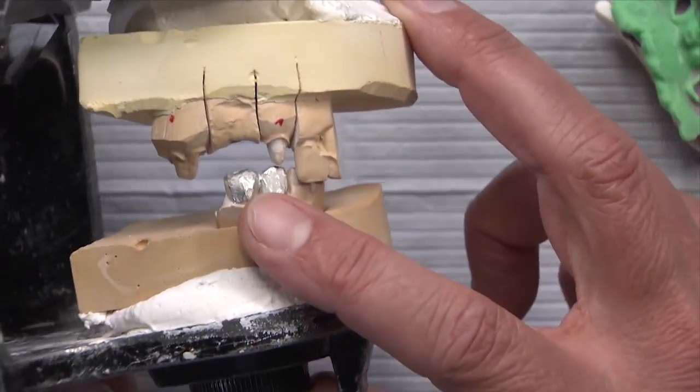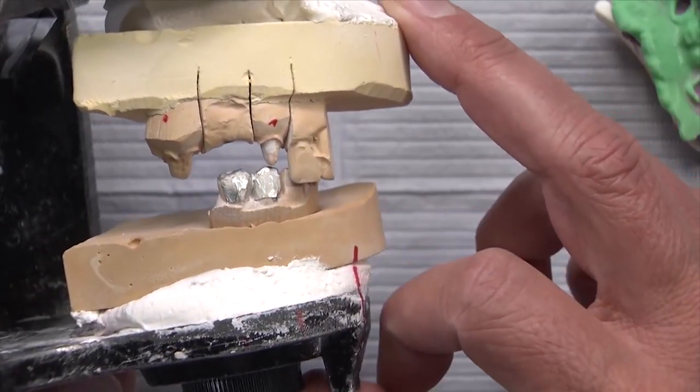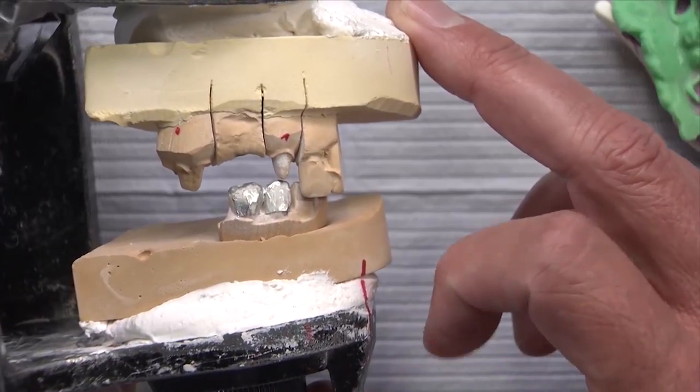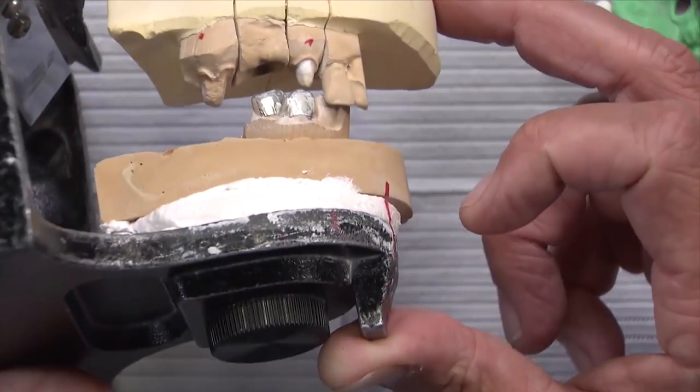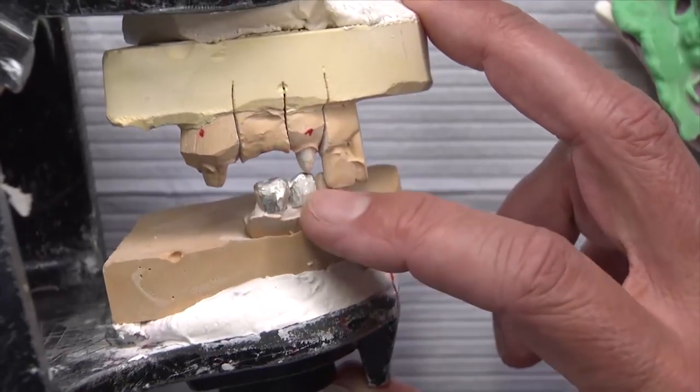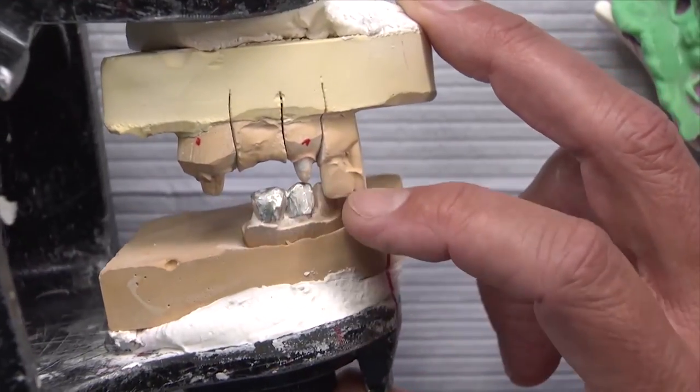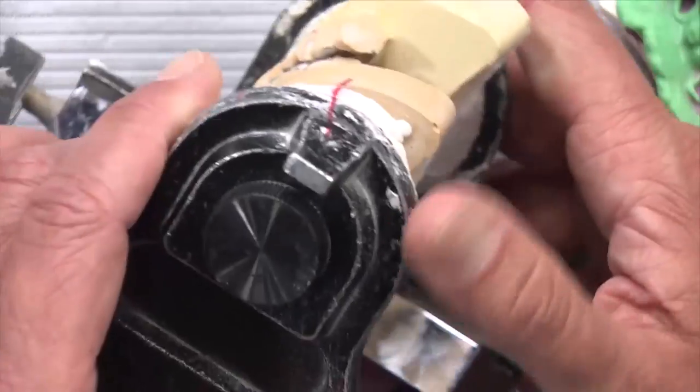we've talked about how we design most of our restorations 100 microns out of occlusion to make up for errors in the temporary and to keep you from having to do excessive occlusal adjustment. This is the old style way of doing this on a PFM case like this, where we have this foil that's actually 100 microns thick and we can put this over the opposing. And create the space that way. Now we do it virtually on any of our CAD cam restorations. But this was in fact for a PFM bridge.